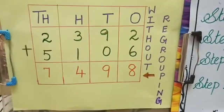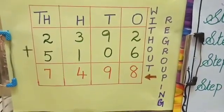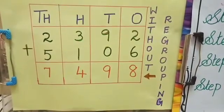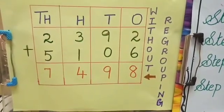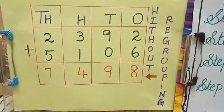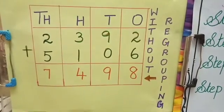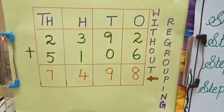Then moving on to the tens place, we have 9 plus 0 gives you 9. And in the hundreds place, we have 3 plus 1 gives you 4. Finally, in the thousands place, we have 2 plus 5 gives you 7. So your answer is 7,498.